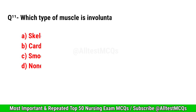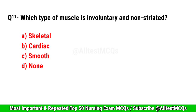Question No. 11. Which type of muscle is involuntary and non-striated? Correct option is C. Smooth muscle.